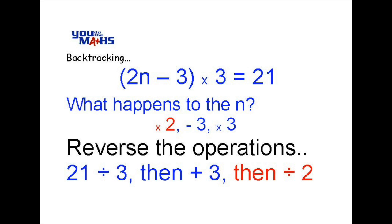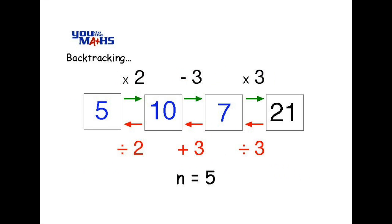The next operation is multiply by 2. Remembering we're going in reverse order here. Now the opposite of multiply by 2 is to divide by 2. So we go back to our boxes and the last arrow moving right to left is to divide by 2. So 10 divided by 2 is equal to 5 and that's our answer. n is equal to 5.